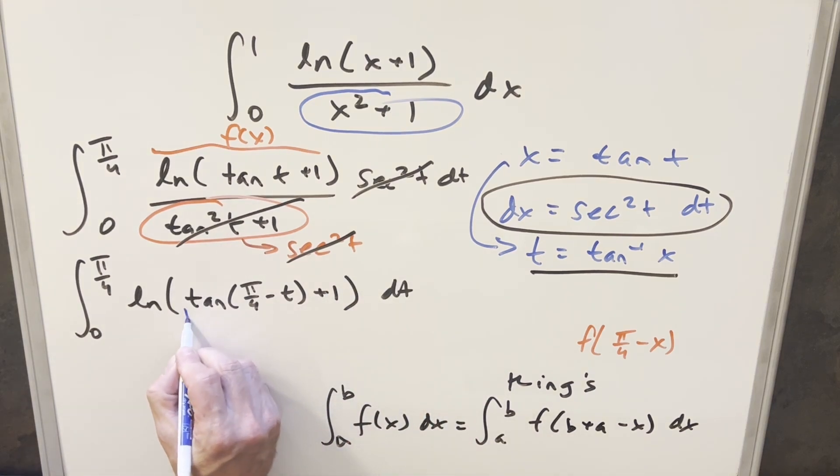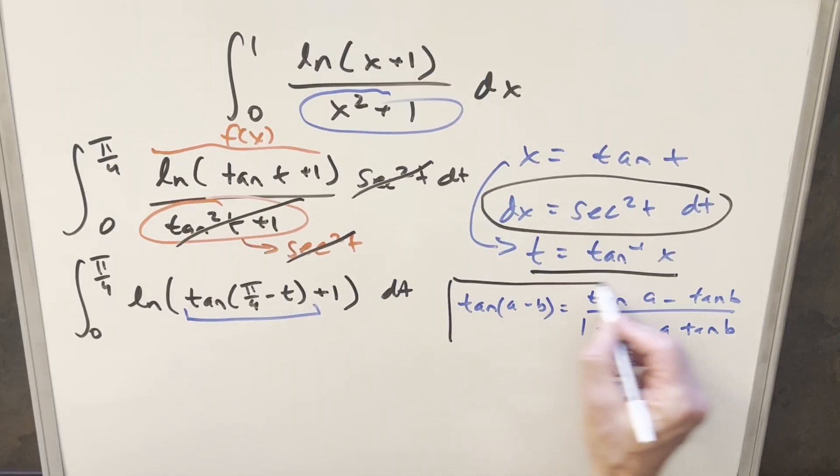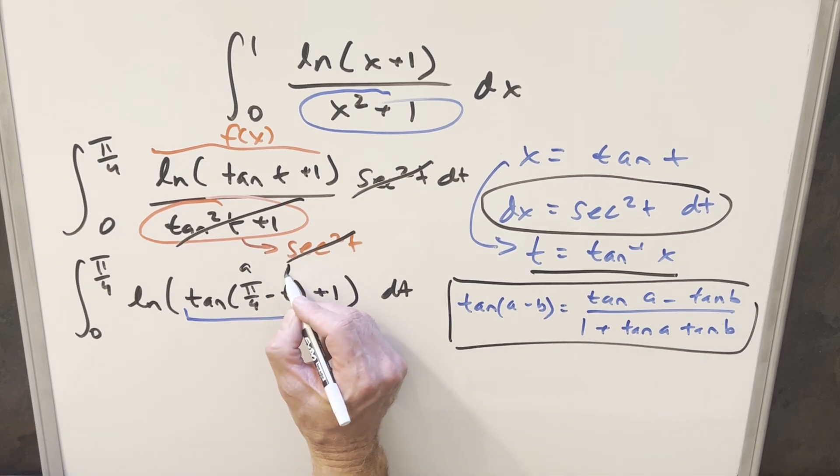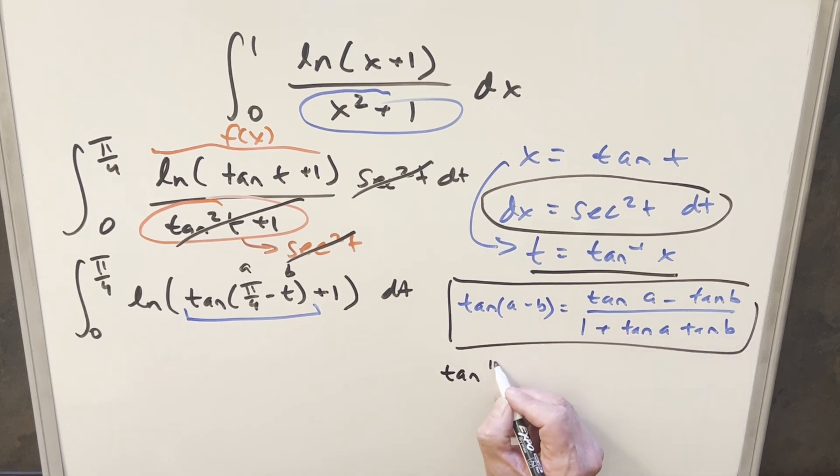But then for this, what we can do is use the difference angle formula for tangent. Let's look at that really quick. Using this, our a value is going to be pi over four, and our b value is just going to be this t. So let's rewrite it in this form. Using this, this becomes tan of pi over four minus tan of t over one plus tan pi over four tan of t.